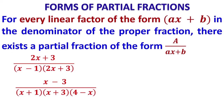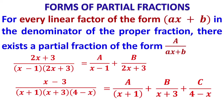Both fractions are proper since the numerator degree is less than the denominator degree. For every linear factor, there should be one partial fraction. So for (x - 3)/[(x + 1)(x + 3)(4 - x)], the partial fractions are: A/(x + 1) + B/(x + 3) + C/(4 - x). We write the given rational function as the sum of simple proper fractions, one for each linear factor.